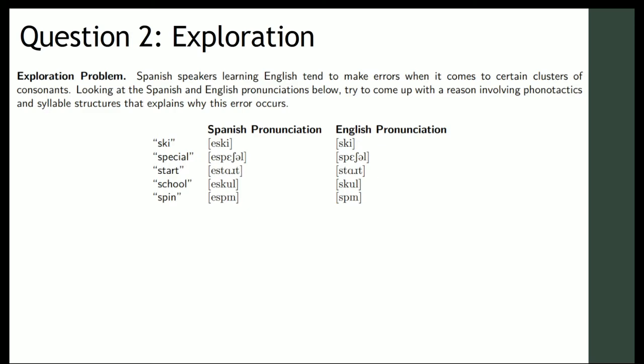The second problem is an exploration problem. We talked about phonotactics in Spanish. And we deduced that there were some combinations that could not appear at the beginning of words like SKW, SPW, SPL, things like that. So here's some data from Spanish. And these are some English words. This is how a Spanish speaker learns to pronounce them. And on the right is how an English speaker would say them. Now there's something phonological happening here. And I think we can see exactly what it is. If you take a look at the two, the only difference is that Spanish speakers add an E at the beginning. So they say esqui, especial, es start, es cool, es pin. Now, why does this happen? There's some reason with phonotactics and syllable structures that explains why this works. So think about it for a minute. Pause the video. And now I'll tell you what happens.